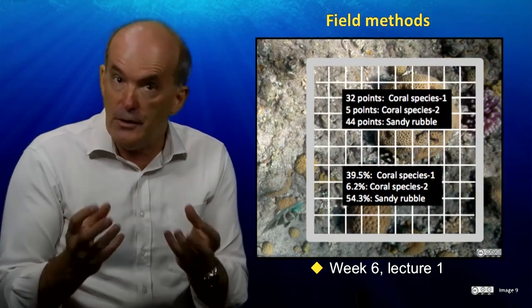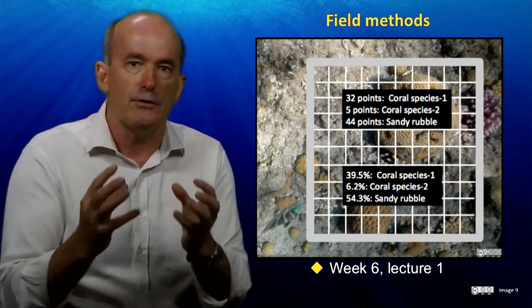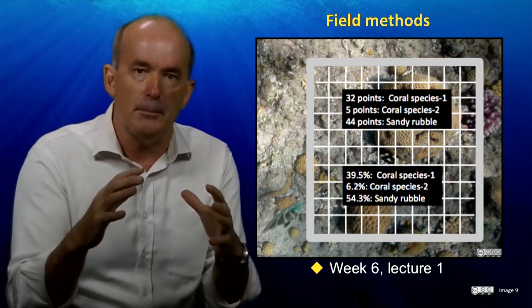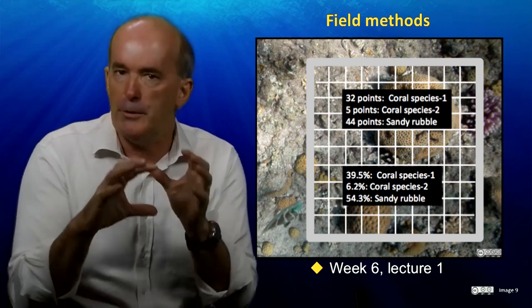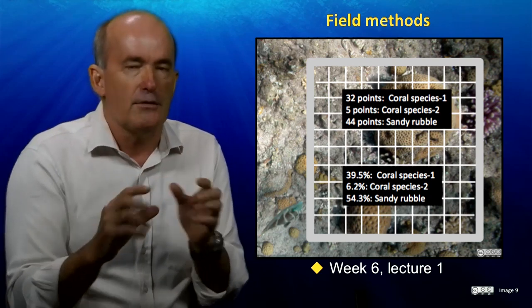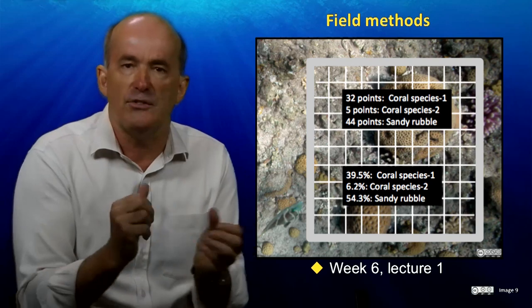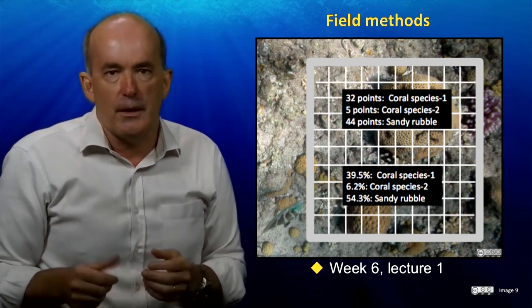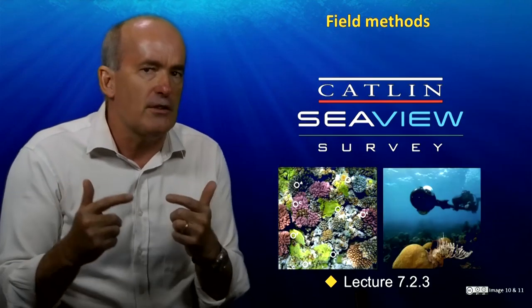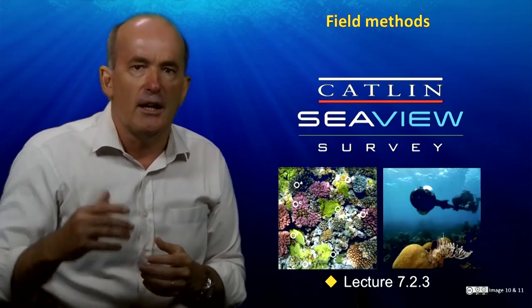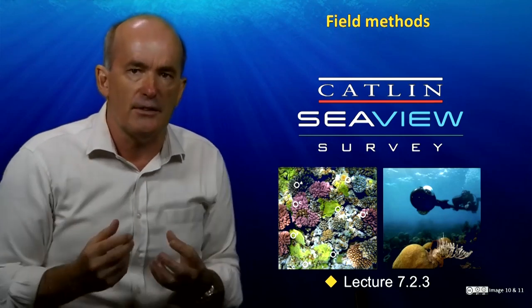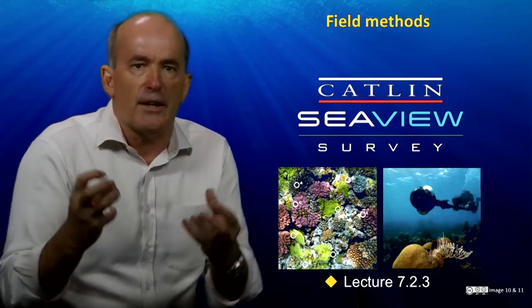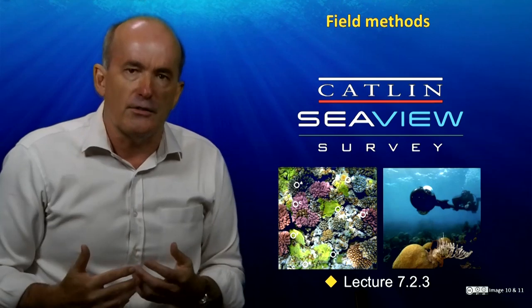While studying field methods, we saw how a quadrat can be used to identify points on the seabed and provide data about the composition of benthic communities, such as the percentage cover of seagrasses, corals, algae, or even just dead space on a reef. We've also seen how projects like the Catlin Seaview Survey and the Global Reef Record are providing high-quality datasets on ecosystems like coral reefs around the world, giving scientists a better global perspective on the health of those ecosystems.